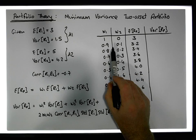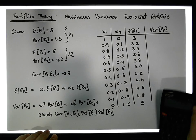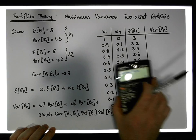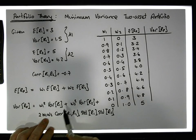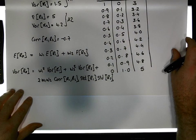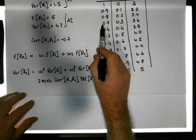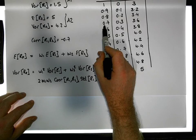Now the variance is a little bit more involved. You can see from the formula that the variance calculation depends on the weights. Let me just do one variance calculation here to illustrate.